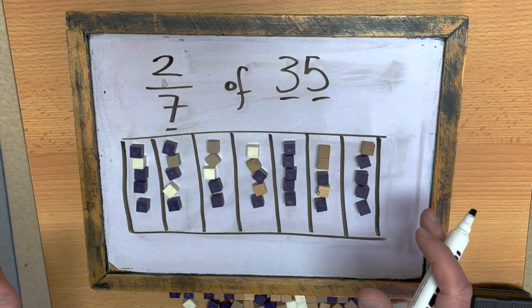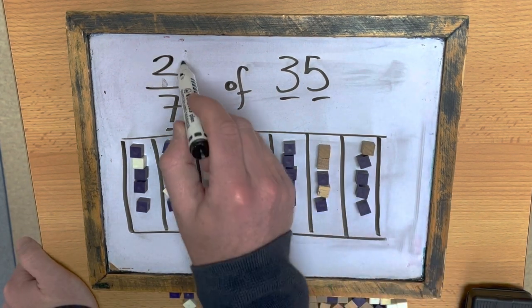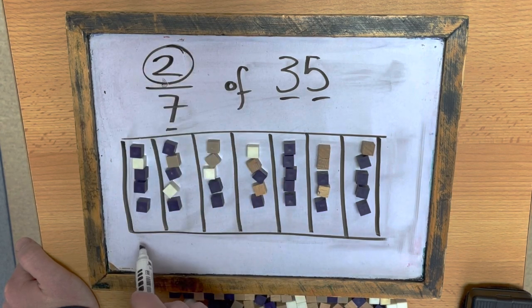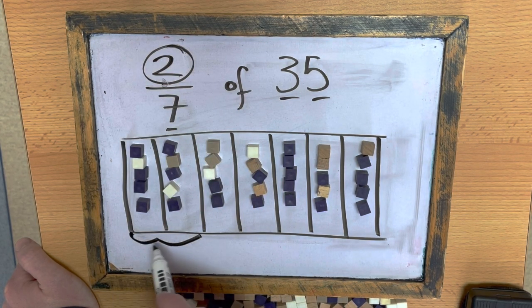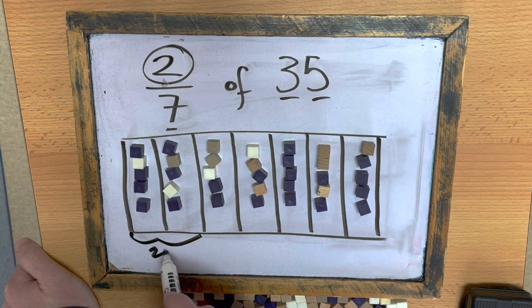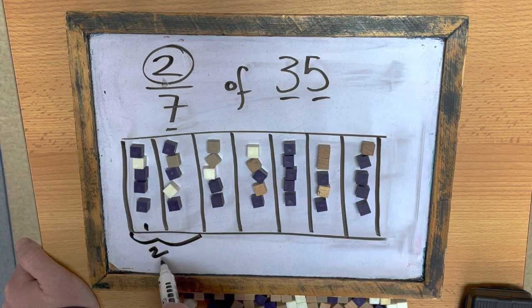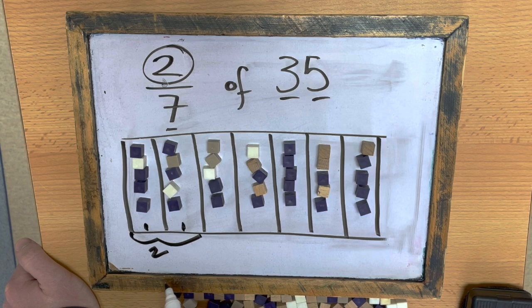Now, I need to find what two sections are worth. So, here's one section and here's two sections. These are one-seventh and this is two-sevenths.